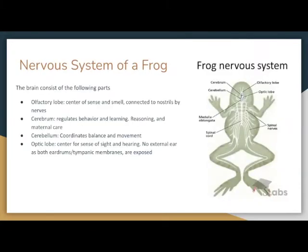The nervous system of the frog. The brain consists of the olfactory lobe, which is the center of sense and smell connected to nostrils by nerves; the cerebrum, which regulates behavior, learning, reasoning, and maternal care; the cerebellum, which coordinates balance of movement; and the optic lobe, which is the center for sight and hearing. Frogs do not have an external ear as both eardrums and tympanic membranes are exposed to the outside world.